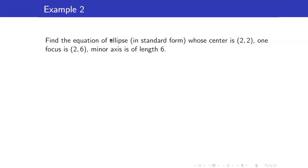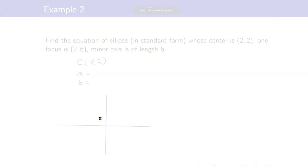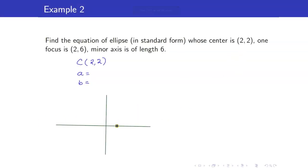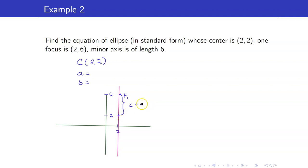Next, let us find the equation of an ellipse where center is (2, 2), focus is (2, 6), and the minor axis is of length 6. We already have the center. Drawing the given: center (2, 2) and focus (2, 6). Since the focus is at (2, 6), this defines a vertical major axis. From this, we can get c, the distance of the focus from the center, so c = 4.